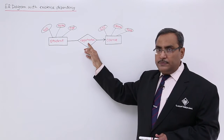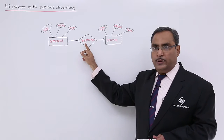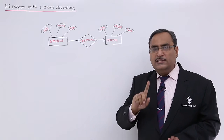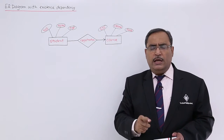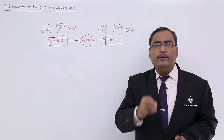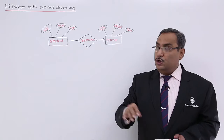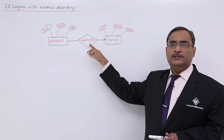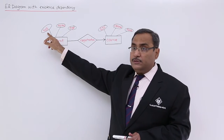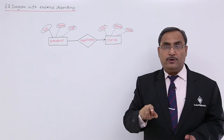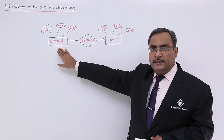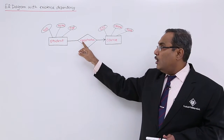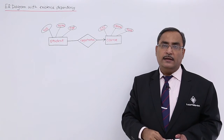Registration has two attributes: the roll number coming from the student as primary key, and course number coming from the course as a primary key. That is known as existence dependency. However, you can find multiple courses where no registration has taken place yet. So all the course numbers appearing in the registration table is not mandatory, but all the roll numbers coming into the registration table — that is mandatory. A student can exist only if his or her roll number is registered in the roll number column of the registration table. That is known as existence dependency.